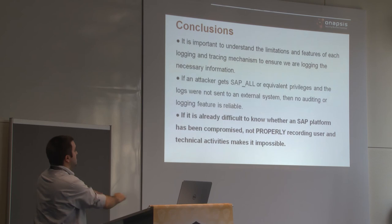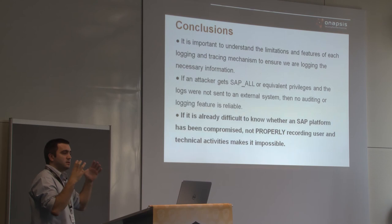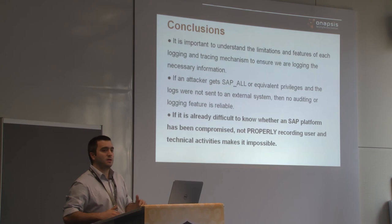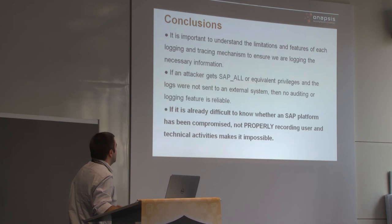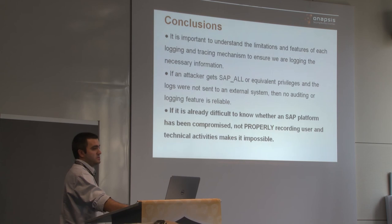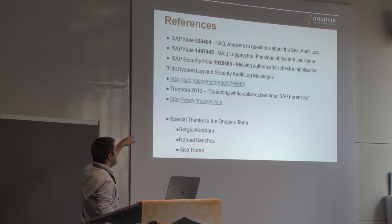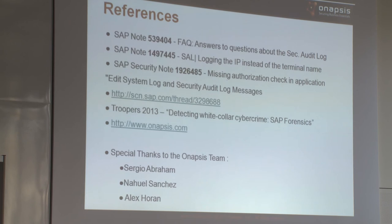Some conclusions: it is important to understand the limits — each logging and tracing capability has its own limitations and locations, and we need to understand what we are enabling and what we are relying on. If there is SAP_ALL equivalent access, you cannot rely anymore on local logs or traces. We can never be sure if a system was actually compromised if we don't have proper tracking of both authenticated and unauthenticated activities. References provided for the security audit log, the previous talk, and SAP security notes.